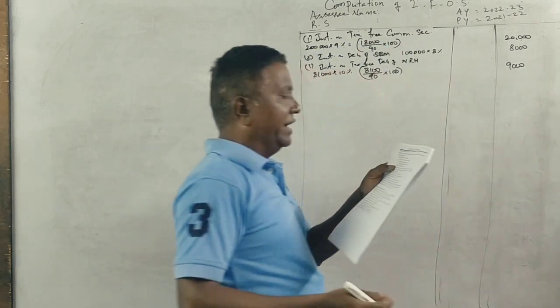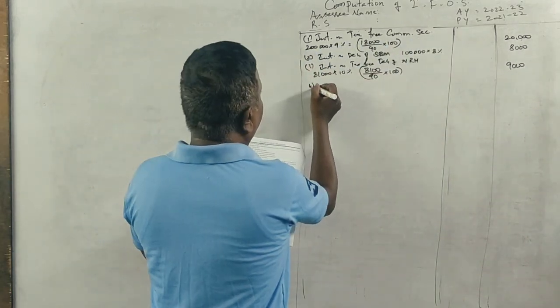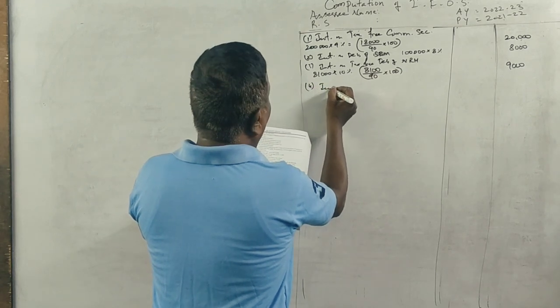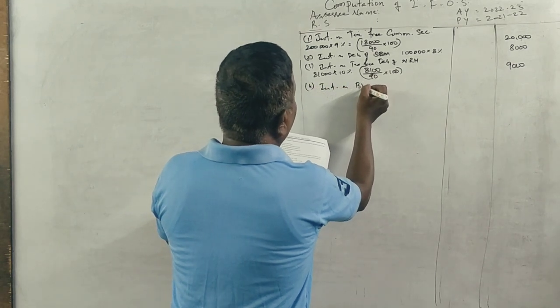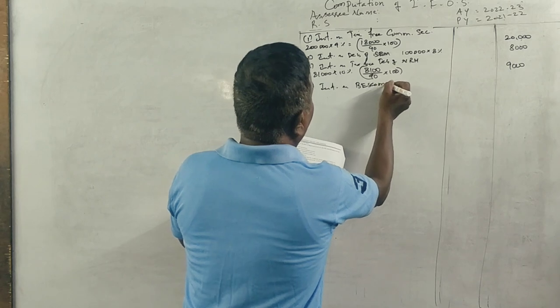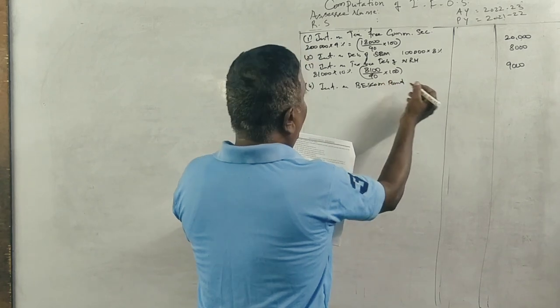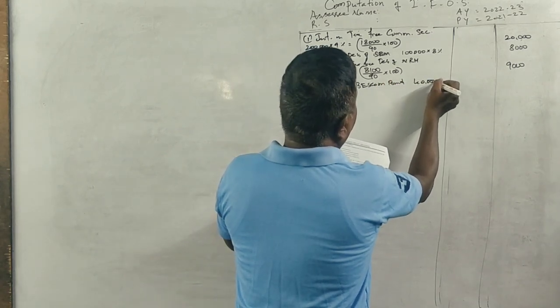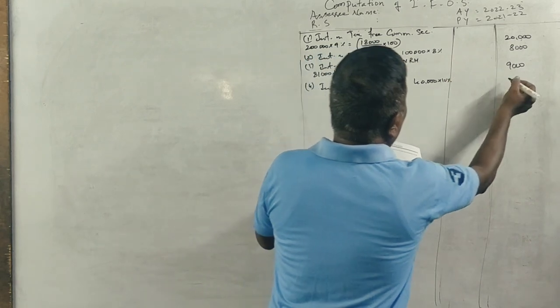Next, 40,000 10% best-com bonds. So interest on best-com bonds is 40,000 into 10%, which equals 4,000.